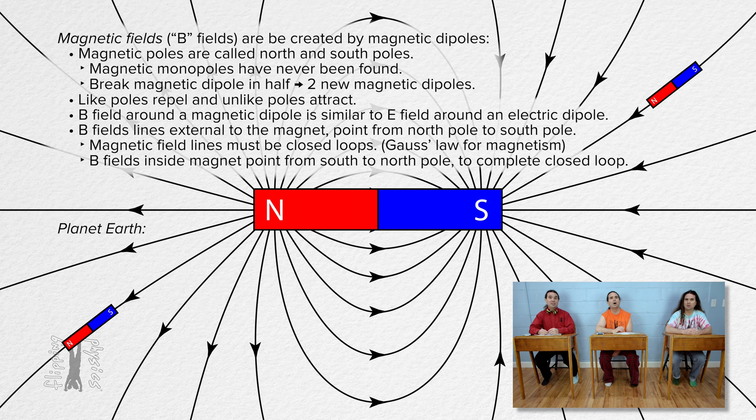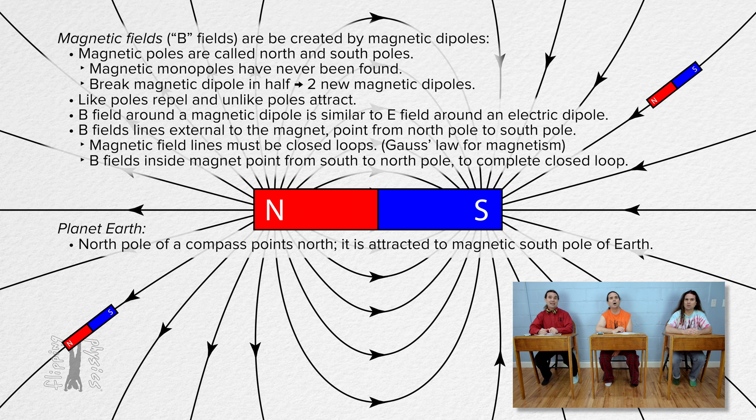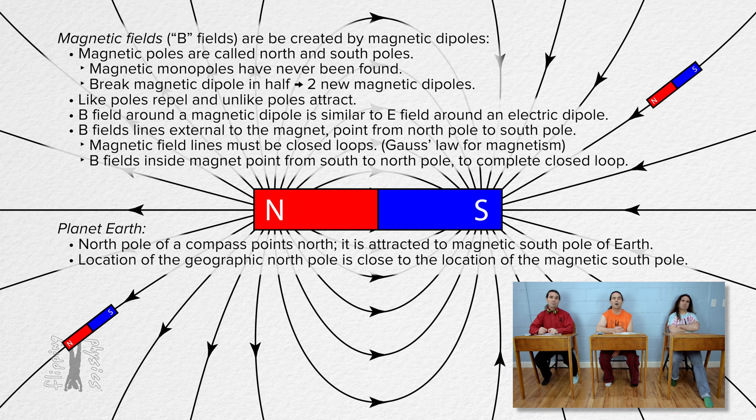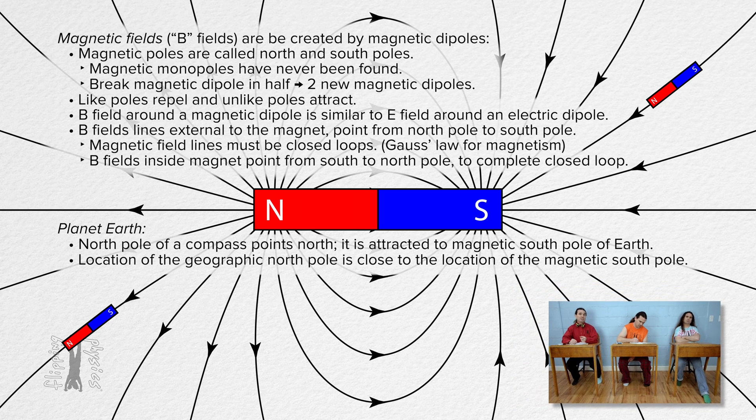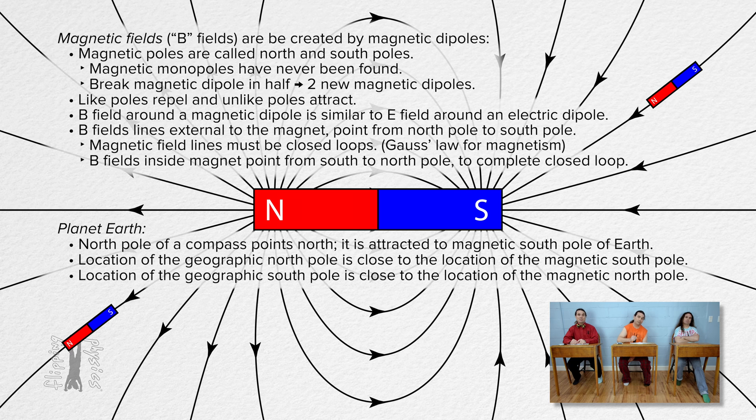Absolutely. When you use a compass, the magnetic north pole of the compass points toward the geographic north pole of the earth. Because the magnetic north pole of the compass is attracted to magnetic south poles, that means the geographic north pole of the earth actually corresponds to the magnetic south pole of the earth. And the geographic south pole of the earth corresponds to the magnetic north pole of the earth. That is correct, Billy.